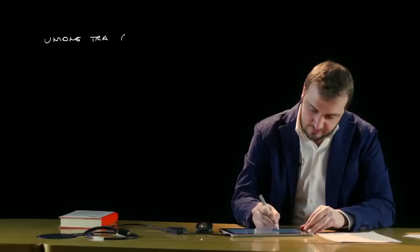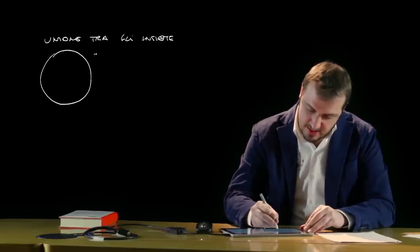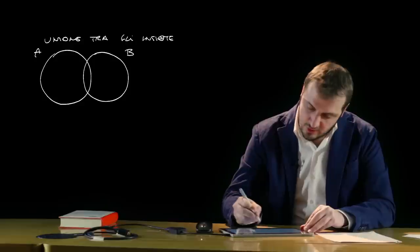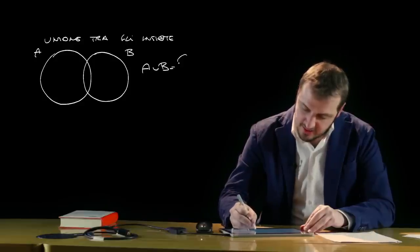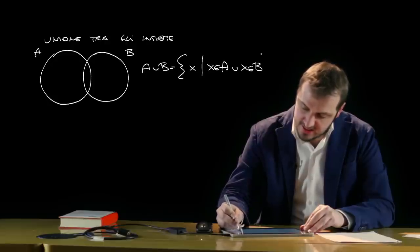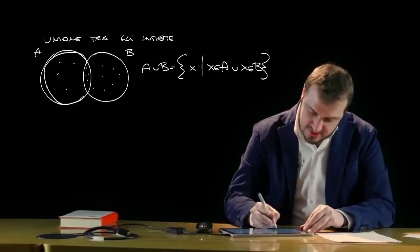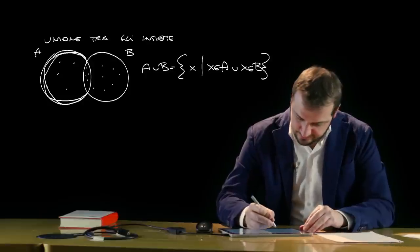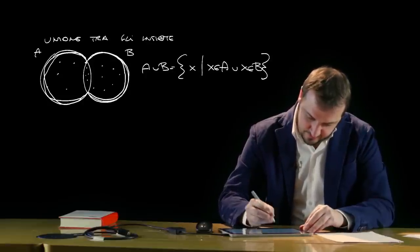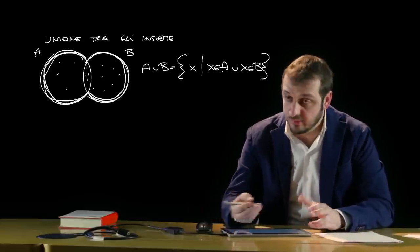Analogamente definiamo l'unione tra gli insiemi. L'unione tra A e B è l'insieme degli x che appartengono ad A oppure appartengono a B. L'insieme unione è dato da tutti gli elementi di A e da tutti gli elementi di B; gli elementi comuni dovranno essere inseriti nell'insieme unione una sola volta.